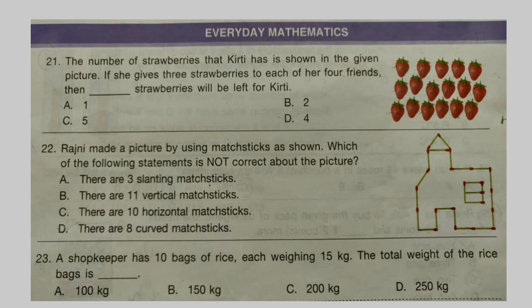Everyday Mathematics. Question 21: The number of strawberries that Kirti has is shown in the given picture. If she gives 3 strawberries to each of her 4 friends, then dash strawberries will be left for Kirti. Look at the options and select your answer carefully. Question 22: Rajini made a picture by using matchsticks as shown. Which of the following statements is not correct about the picture?